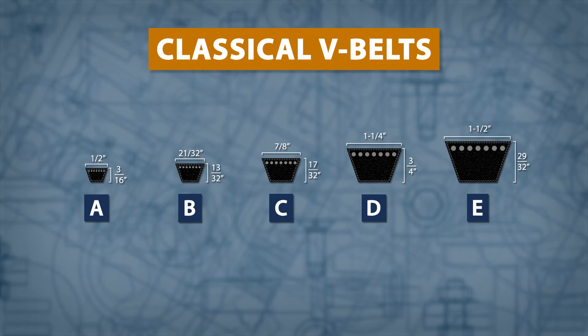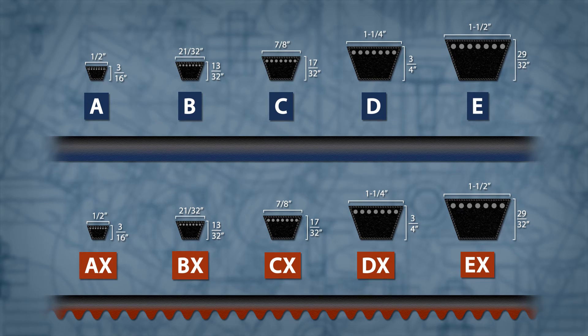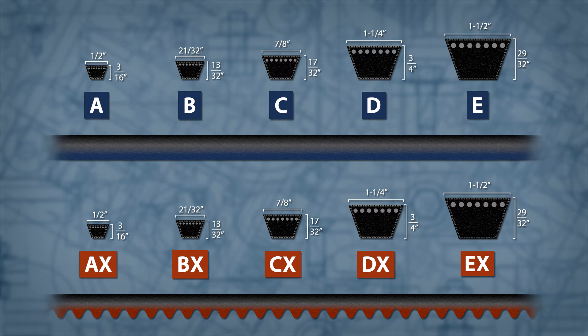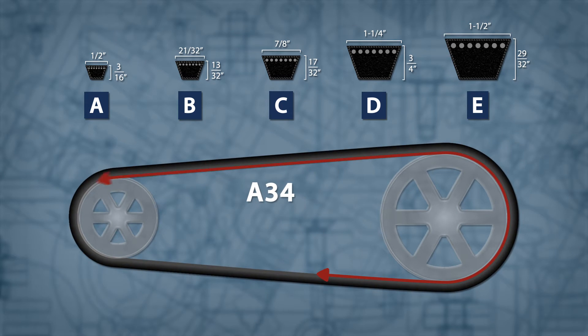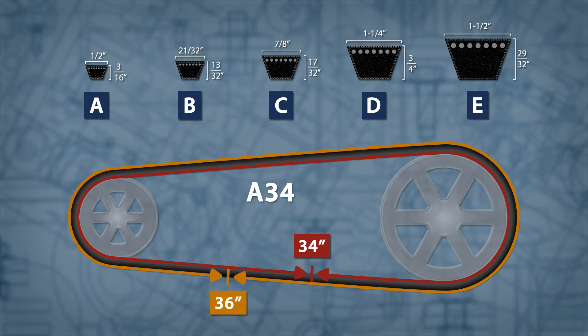Classical belts are also available as cogged belts, which adds an X to the prefix. Unlike other belts, classical belts are designated by the inside circumference. This means an A34 belt is a half-inch wide and will have an outside circumference of 36 inches.